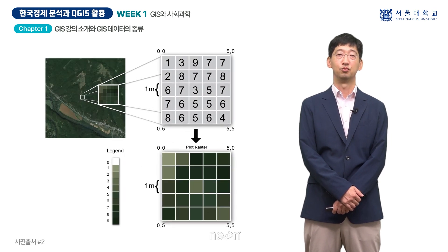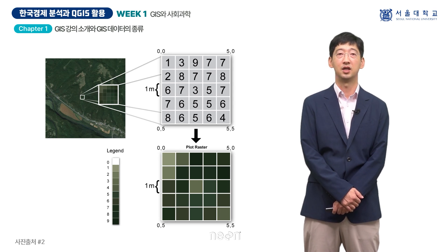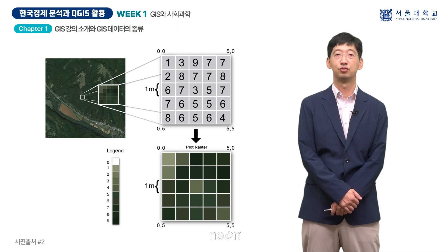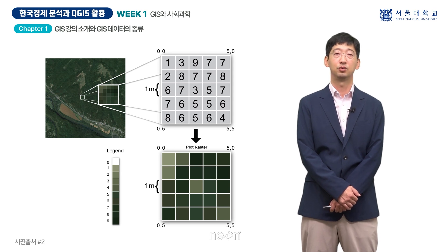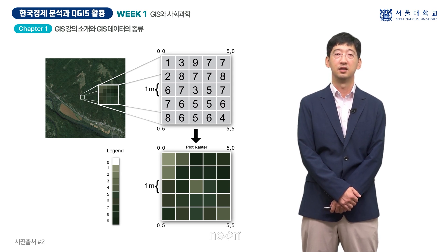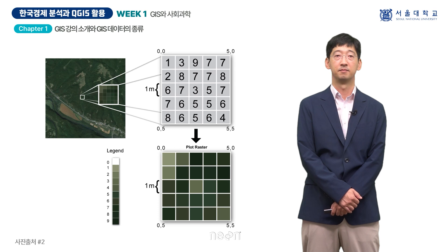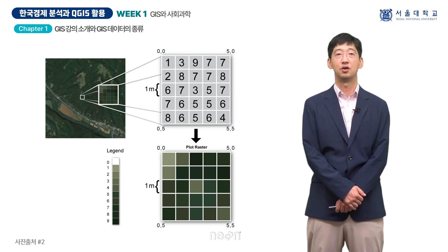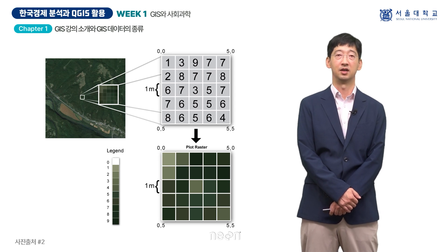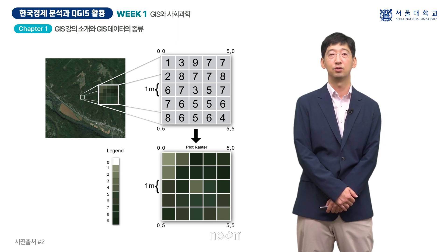라스터 데이터의 대표적인 예시는 위성 영상입니다. 핸드폰 카메라처럼 센서가 데이터를 얻을 때 보통 격자 단위 또는 하나하나의 픽셀 단위로 구성되어 있습니다. 픽셀 단위로 수치 정보가 기입되어 있고, 라스터 데이터도 GIS 데이터이기 때문에 각각의 좌표 위치가 담겨 있으며 격자별로 정보가 있습니다. 라스터 데이터는 벡터 데이터와 달리 건물을 하나의 오브젝트로 저장하는 것이 아니라 건물에 해당하는 격자 단위로 정보가 기록되는 것입니다. 마찬가지로 도로도 라스터 데이터로 표현하는 경우 격자 단위로 저장됩니다.